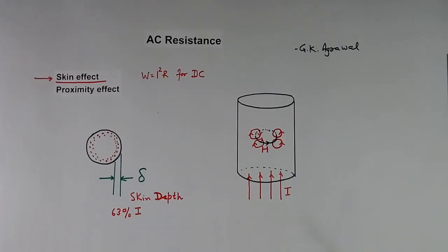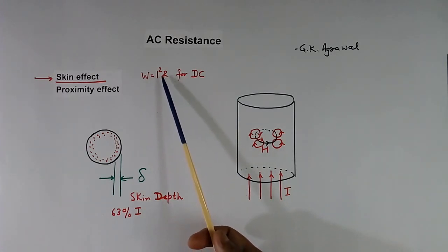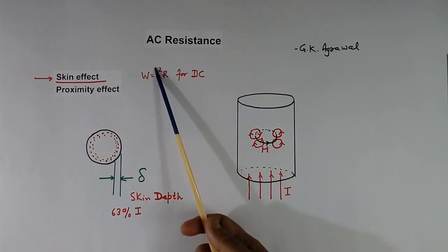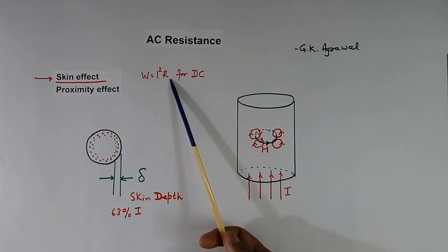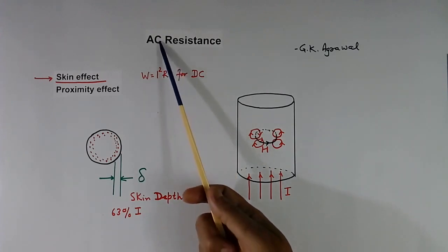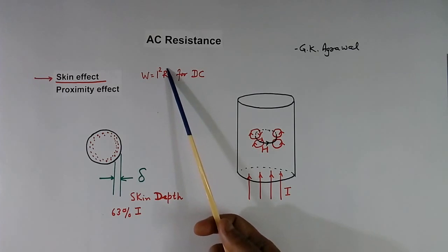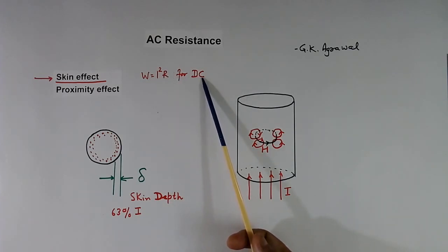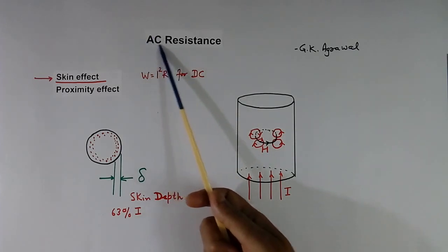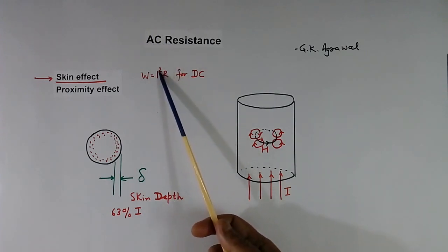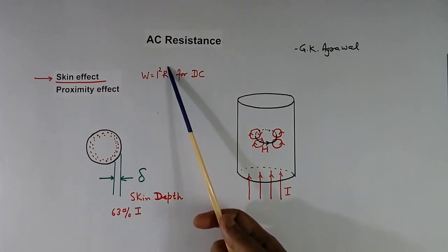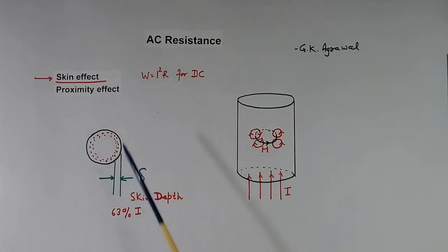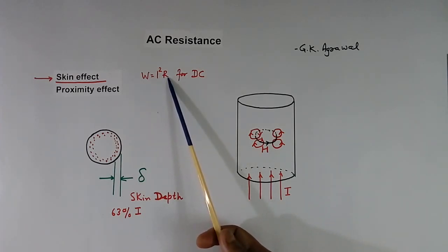Welcome. Today's topic is AC resistance. We know when current flows in a wire with resistance R, the power loss will be I²R. In the case of AC, the resistance of the wire will be more than DC resistance. And the higher the frequency of AC, the higher the resistance value will be. So this formula will not remain valid — we have to use a new value of resistance.